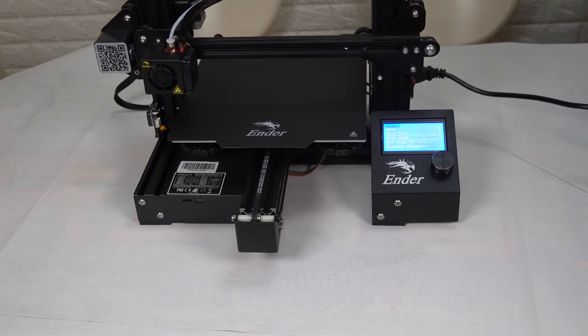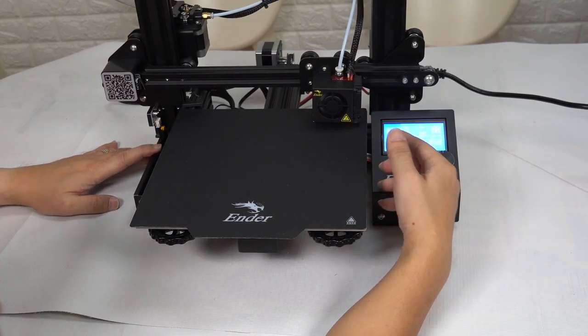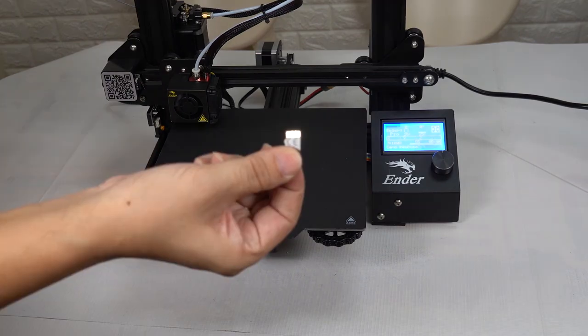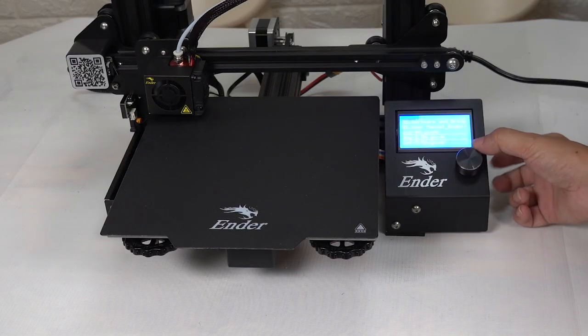Control the print head returns to home. Use manual leveling to level the four corners. Then, insert the SD card containing files into this position. Now it is ready to print.